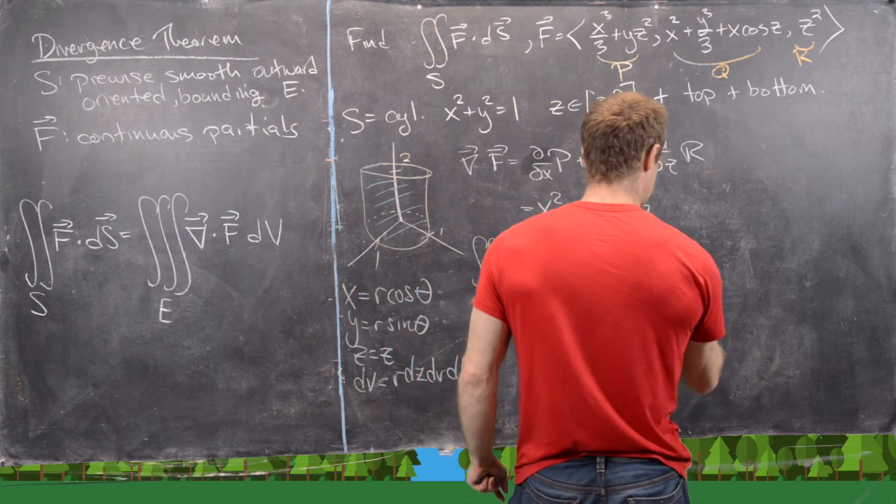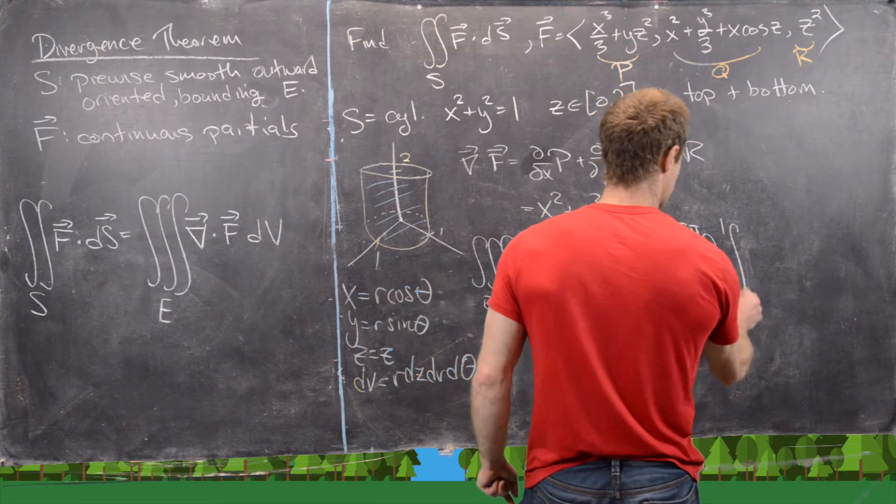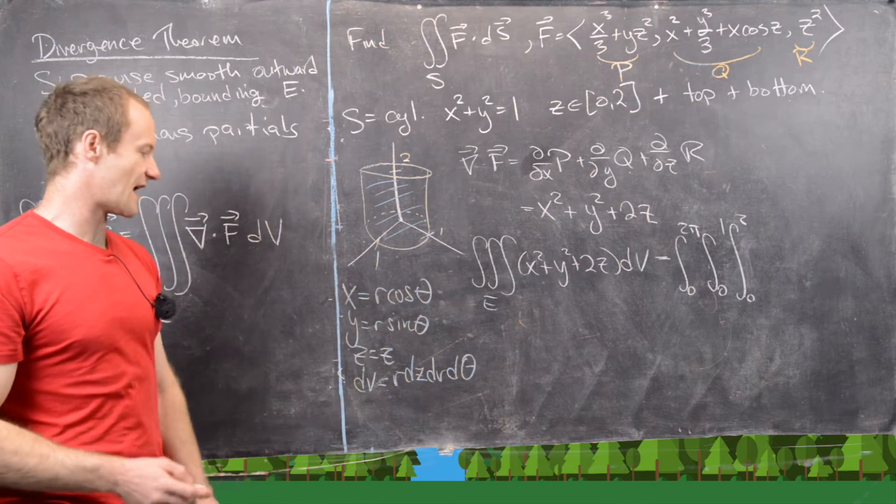So here we'll have 0 to 2pi, 0 to 1, 0 to 2. So I'm doing z inside, r middle, and theta outside.